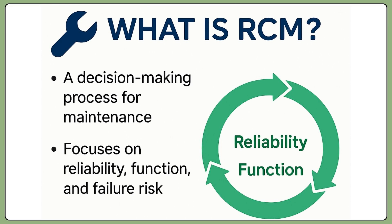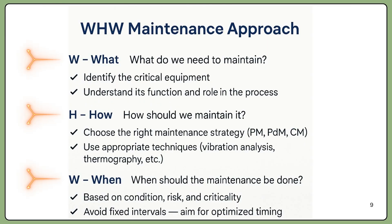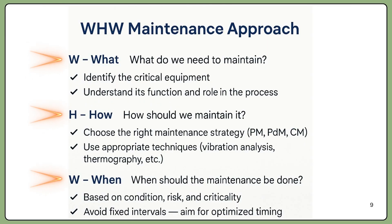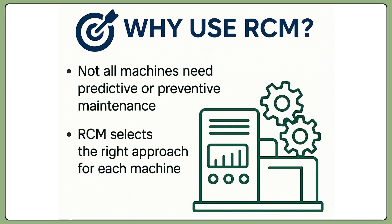RCM is not just a type of maintenance — it is known as a decision-making process. It helps us figure out three things, abbreviated as WHW. The first W stands for 'what' — what we need to maintain. The H stands for 'how' — how should we maintain it. And the third W stands for 'when' — when this maintenance should be done.